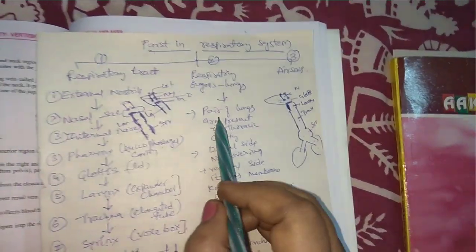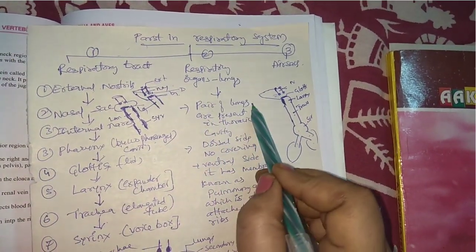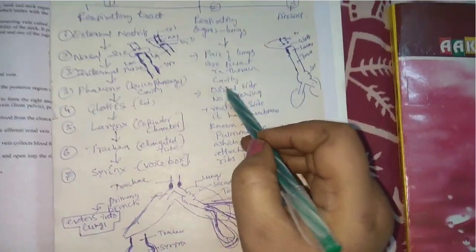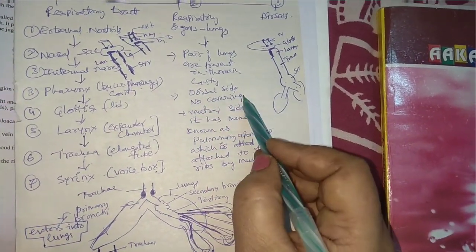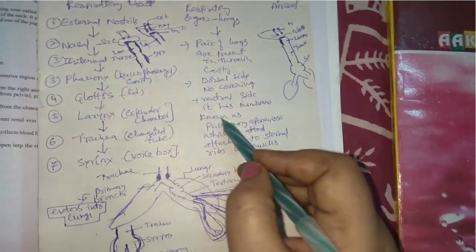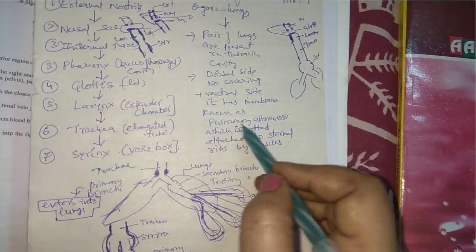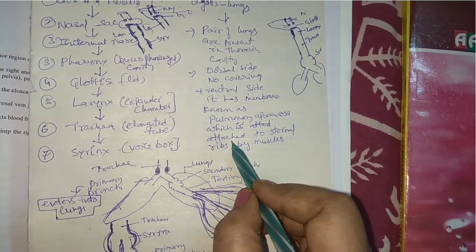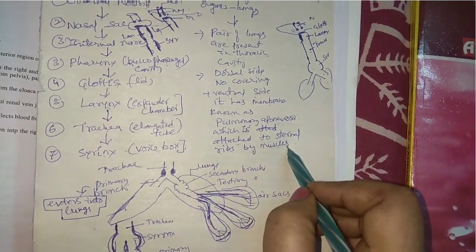A pair of lungs are present in the thoracic cavity. On the dorsal side of the lungs the covering is absent, but at its ventral side it has a membranous covering known as the pulmonary aponeurosis, which is attached to the sternal ribs by muscles.